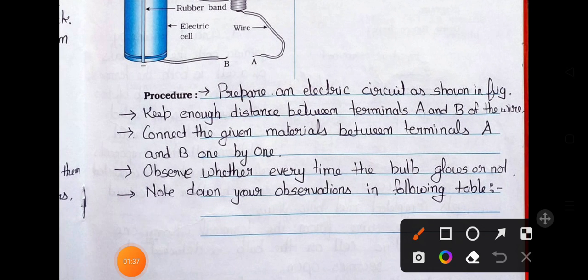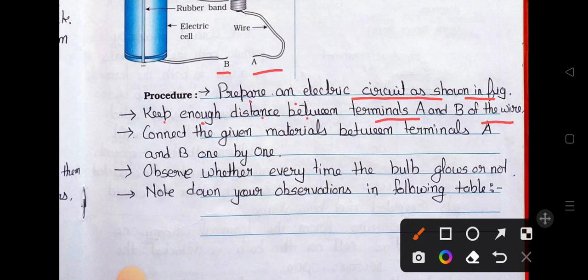Procedure: prepare an electric circuit as shown in the figure. Keep enough distance between terminals A and B. Here are the terminals A and B — keep the distance of the wire. Connect the given materials between terminals A and B one by one. Observe whether the bulb glows or not every time.